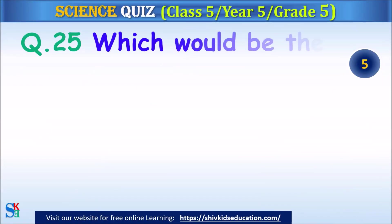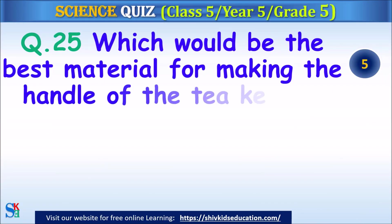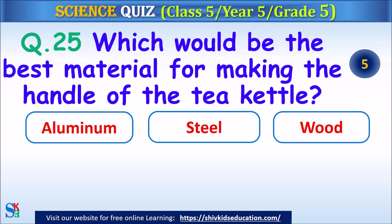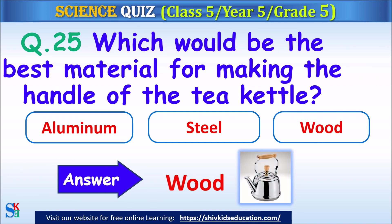Question 25: Which would be the best material for making the handle of a tea kettle? Aluminium, steel or wood? The answer is wood.